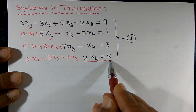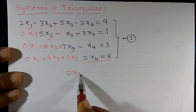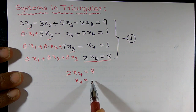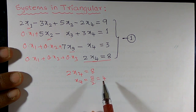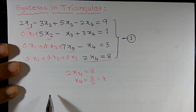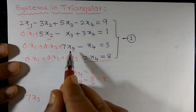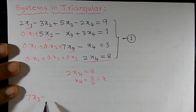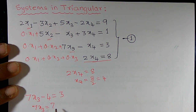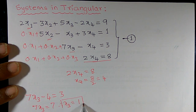From the last equation, 2x4 is equal to 8. Therefore, x4 is equal to 8 divided by 2, that is equal to 4. Now I want to substitute this value in the previous equation. The previous equation is 7x3 minus x4 equals 3. Therefore, 7x3 is equal to 3 plus 4, which equals 7. So x3 is equal to 7 by 7, that is x3 equals 1.